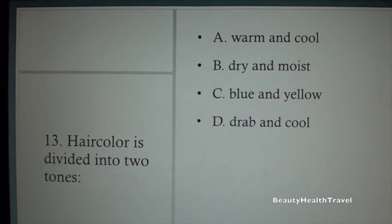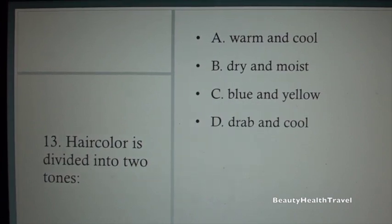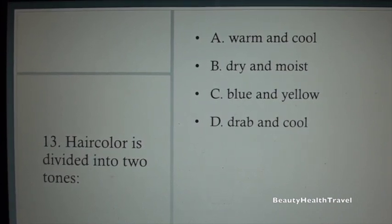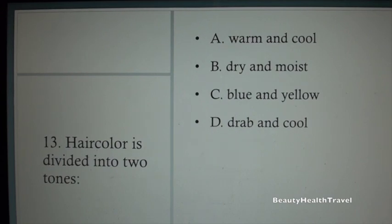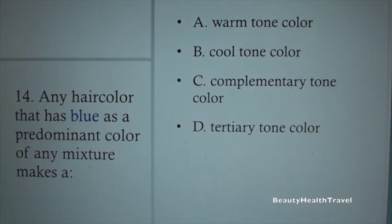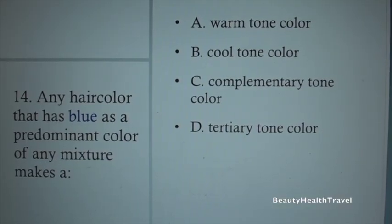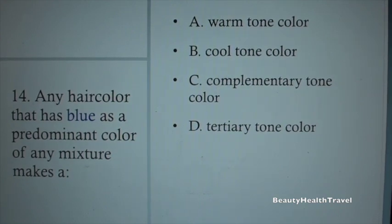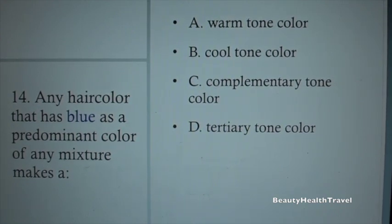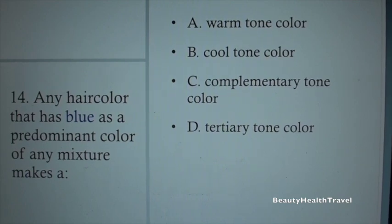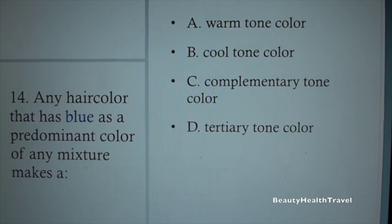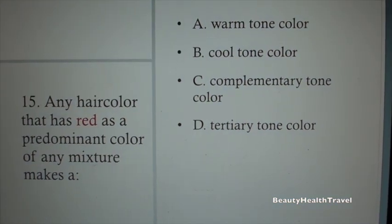Question 12: Complementary colors are: A. Red and green, B. Blue and orange, C. Yellow and violet, D. All of the above. Question 13: Hair color is divided into two tones: A. Warm and cool, B. Dry and moist, C. Blue and yellow, D. Drab and cool.